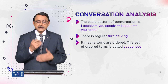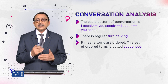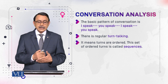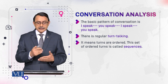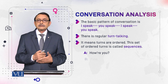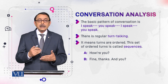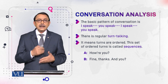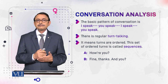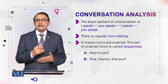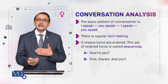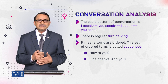For example, let's see this conversation. A says: 'How are you?' B says: 'Fine, thanks. And you?' So there is one speaker, the other is listener. And after speaker A finishes, then speaker B responds to that. This illustrates the sequenced, ordered nature of turns in conversation.